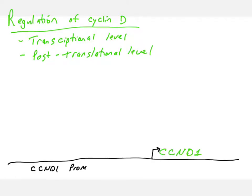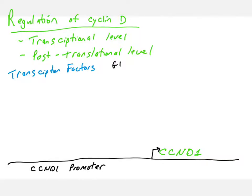When we talk about regulating something at the transcriptional level, we're talking about regulating at the gene level. I've drawn here the gene that codes for the cyclin D protein — the name of the gene is CCND1, which codes for the cyclin D1 protein. I've drawn upstream of the transcription start site a promoter, and we know that transcription factors can bind promoters and activate gene transcription, turning genes on. That is a very key way that cells regulate genes — by regulating transcription factors that bind at the promoter.